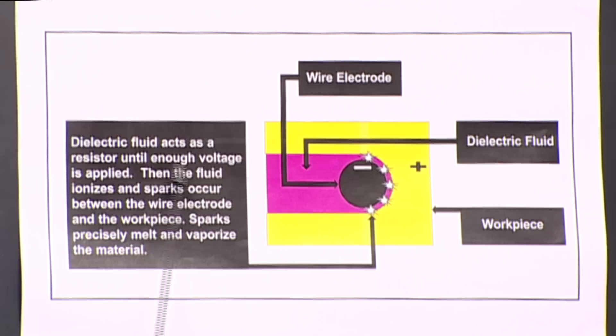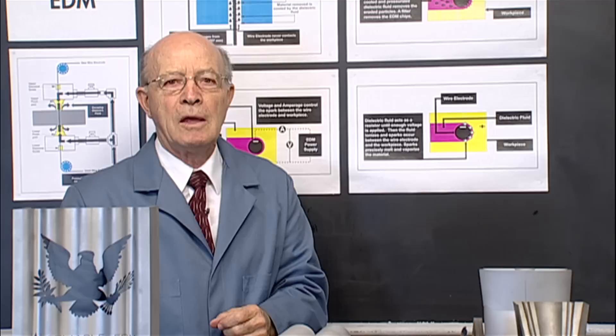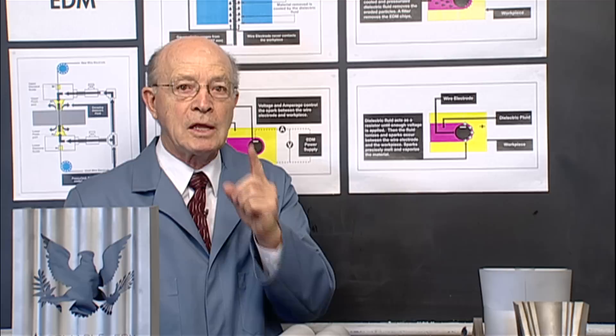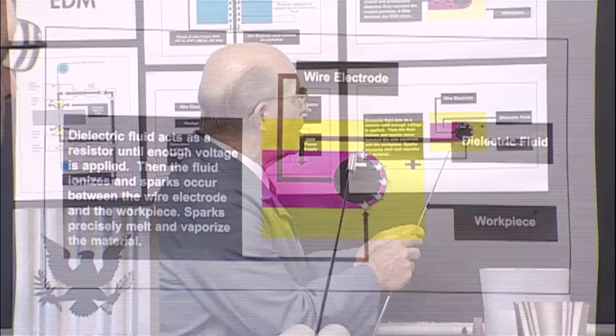Then the fluid ionizes and sparks occur between the wire electrode and the workpiece. So here we see the sparks occurring between the wire and the workpiece. An interesting thing happens during the sparking process.